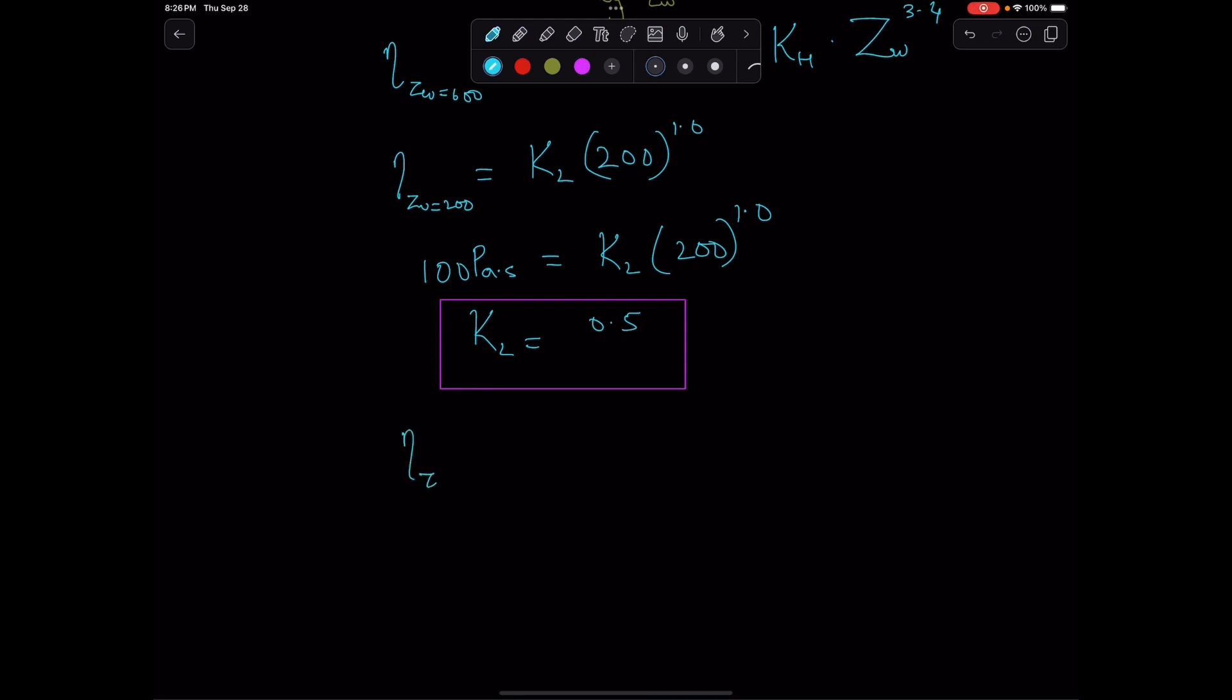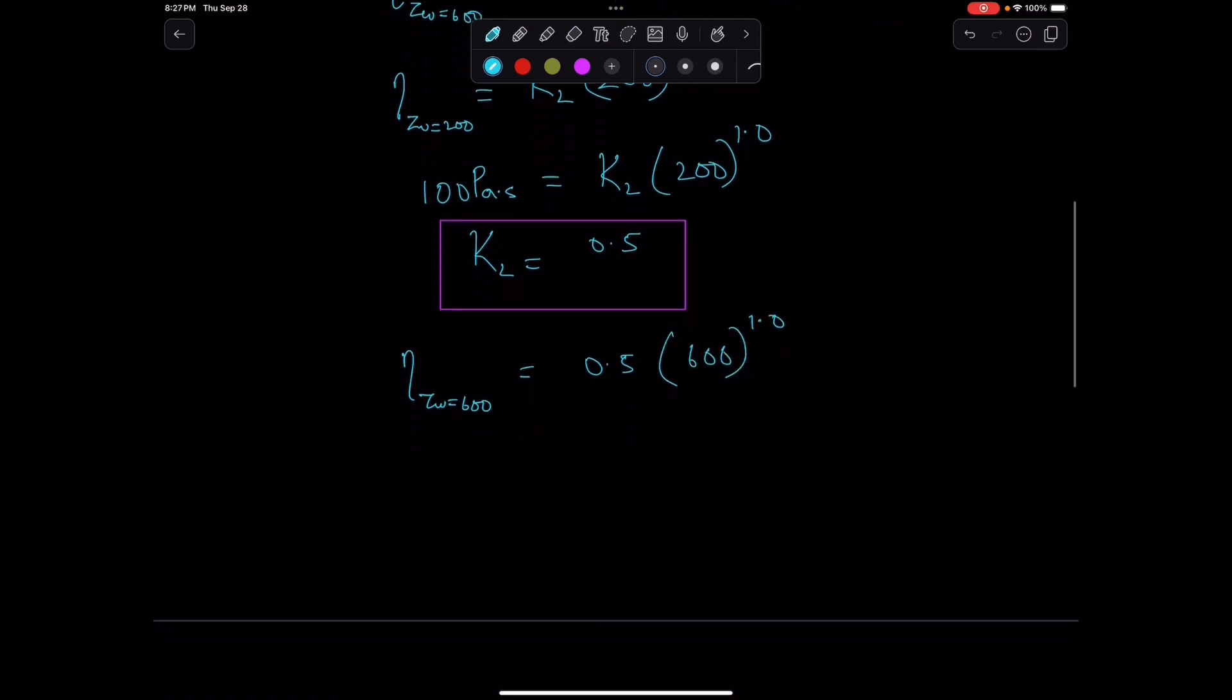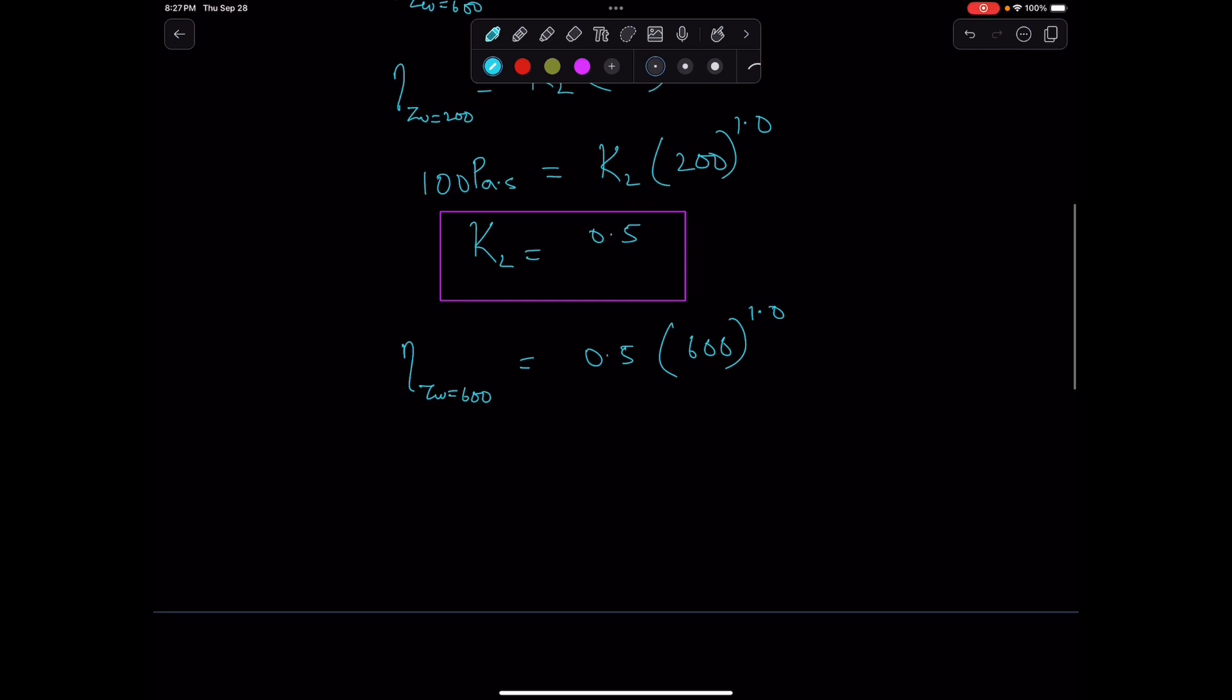At ZW equals 600, we can say that the viscosity equals KL, which is 0.5, times 600 to the power 1.0, which will be 300. So eta at ZW equals 600 is 300 pascal seconds.